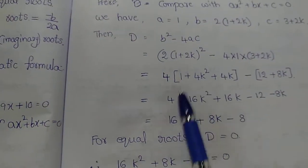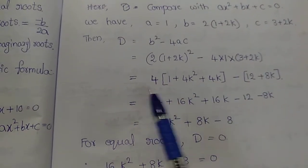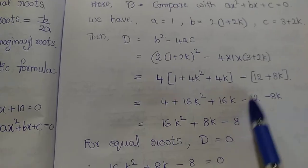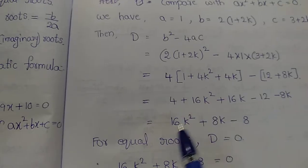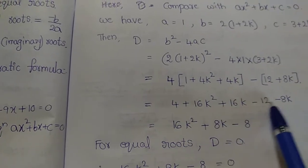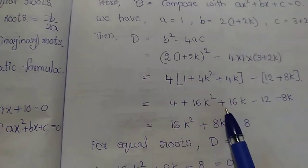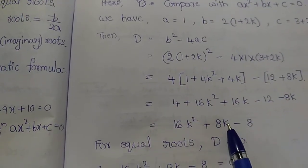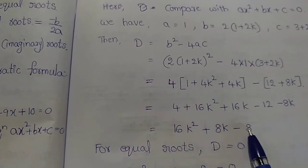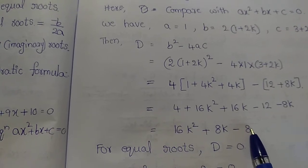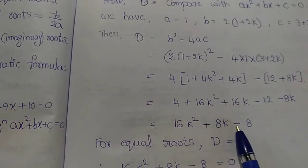Expanding further: 4 into 1 gives 4, giving 16k squared plus 16k minus 8k. Combining terms: 16k squared plus 8k minus 12 plus 4, which simplifies so the constant becomes minus 8.